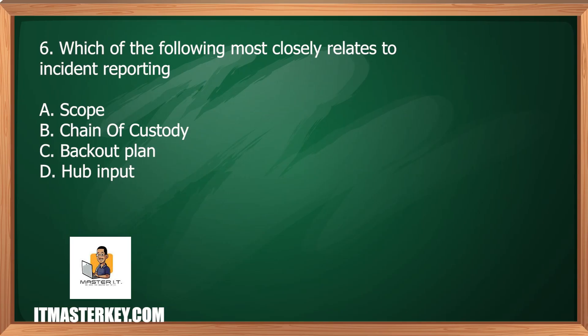Which of the following most closely relates to incident reporting? Is it scope, chain of custody, back-out plan, or hub input?